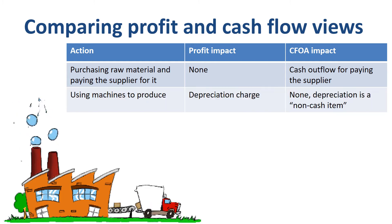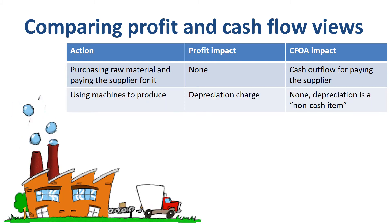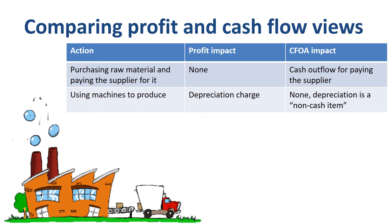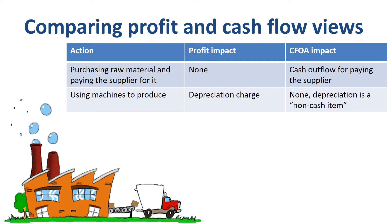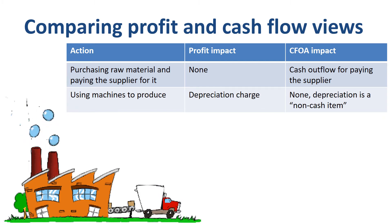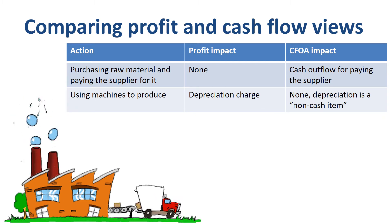If you use the machines in the factory to produce, you book a depreciation charge in the income statement. Your costs become higher and your profit lower. For cash flow, depreciation is not relevant, as you do not pay depreciation to anyone — hence there is no cash outflow.